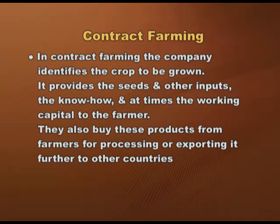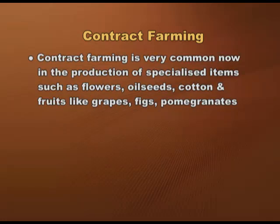In contract farming, the company identifies the crop to be grown, provides seeds and other inputs, know-how, and at times even working capital to the farmer. They also buy products from farmers for processing or exporting to other countries. Contract farming is now very common in the production of specialized items such as flowers, oilseeds, cotton, and fruits like grapes, figs, and pomegranates.